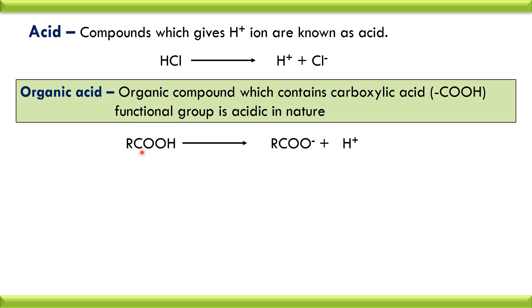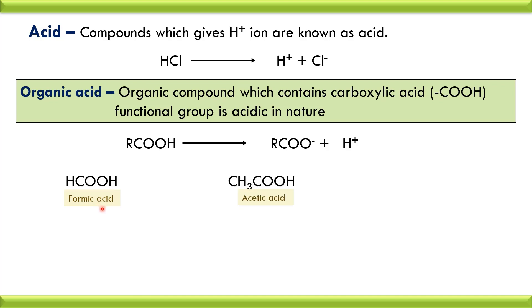Such compounds are acidic in nature because upon ionization they give H⁺ ion. This is the general formula of organic acid: RCOOH. Upon ionization, it gives carboxylate ion plus H⁺ ion, therefore it is acidic in nature. Compounds containing COOH group are considered as acids. For example, formic acid — as it contains a COOH group, it is acidic in nature. This is CH₃COOH, that is acetic acid.